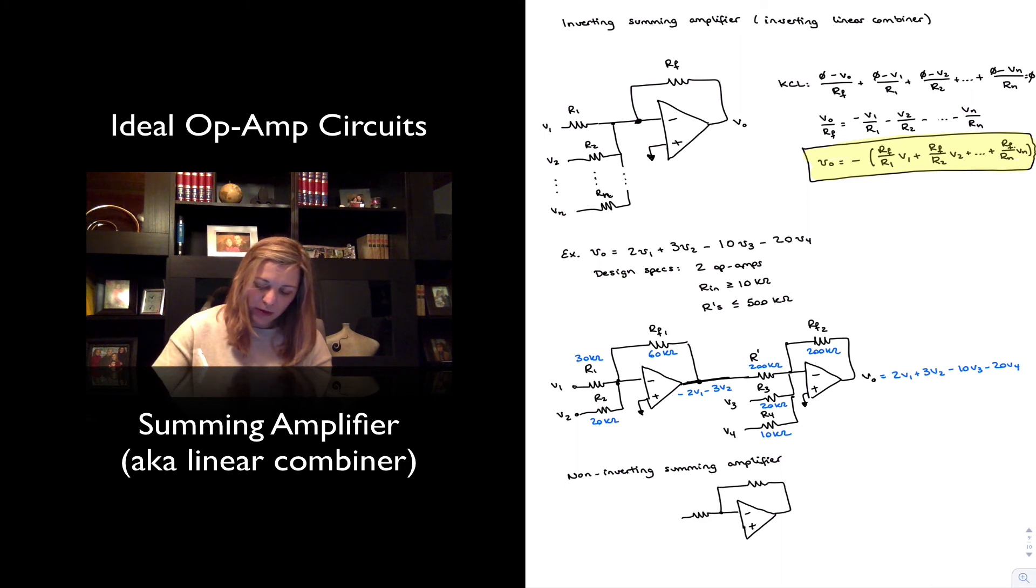And so in here I just have RF, R let's call it Ri going to ground and then at the positive input terminal I will have, you know, my V1, V2, etc. R1, R2, and so forth.